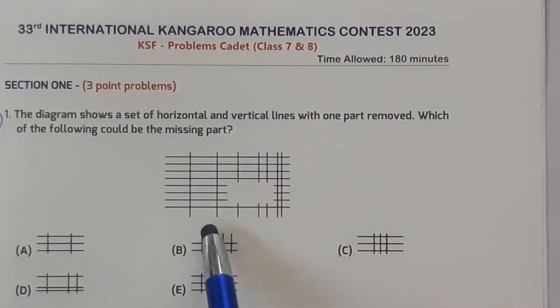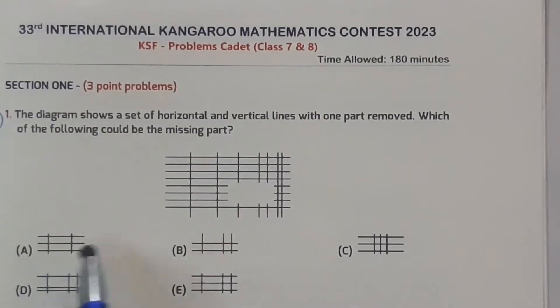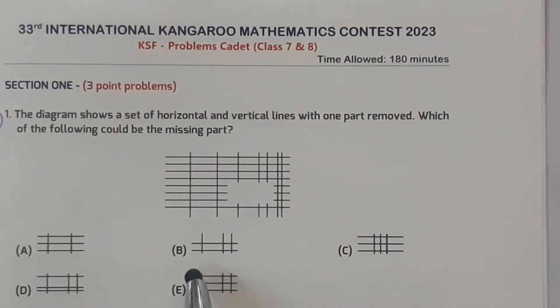So we look at the first piece. Here are three lines, but here there are two lines and we need three lines, so this is not the piece. Here there are two lines but we need three lines, so this is not the answer.